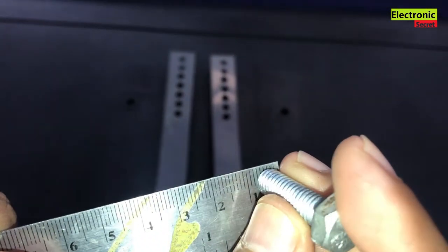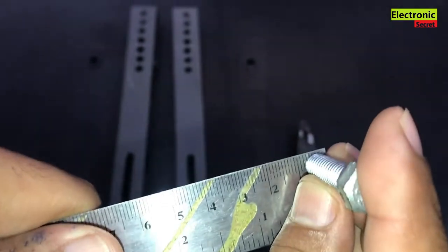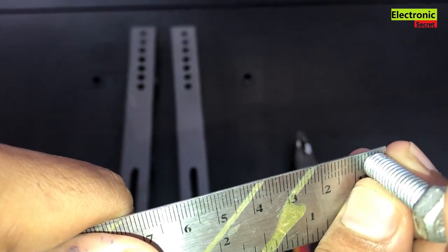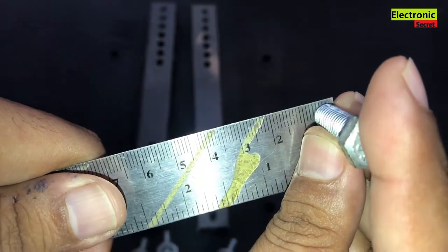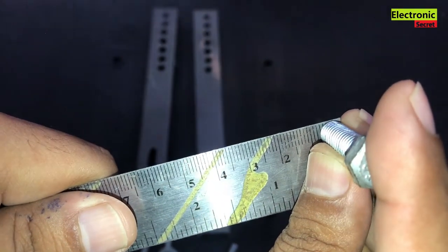So the screws I am using are 1 inch long and having diameter 8 mm. Use exact screws so your TV will mount on the wall firmly and wall brackets should be locked.